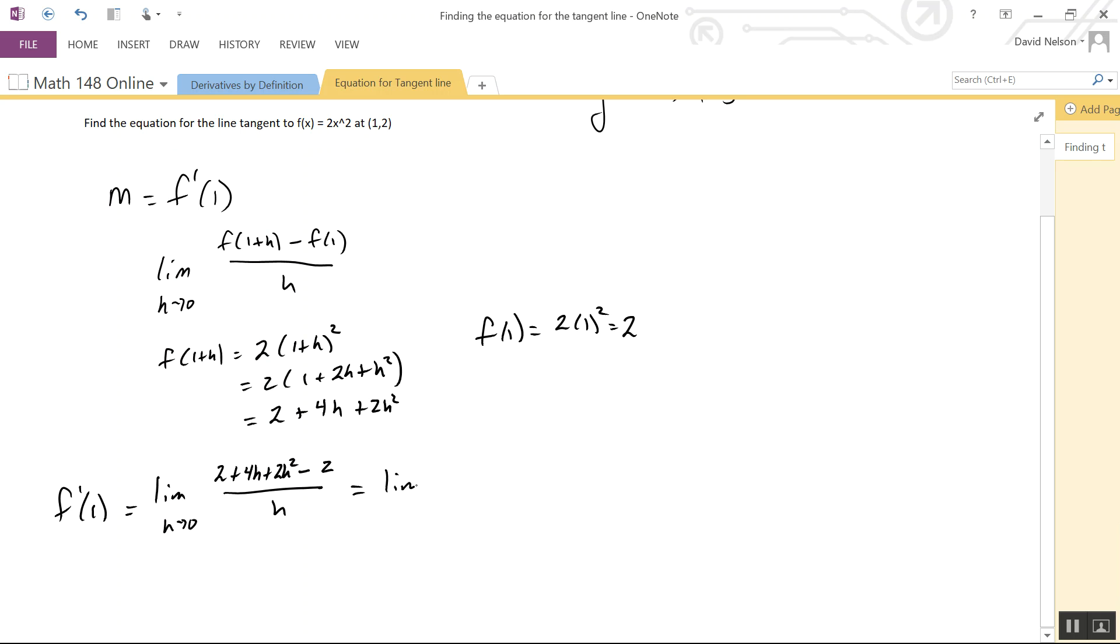I'm looking at the limit as h goes to 0 of (4h + 2h²)/h. We can factor out an h on top and cancel it with the h on the denominator.